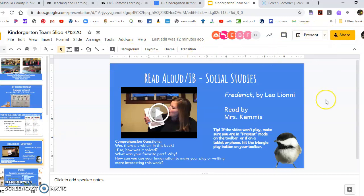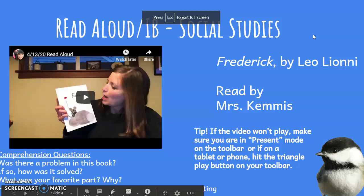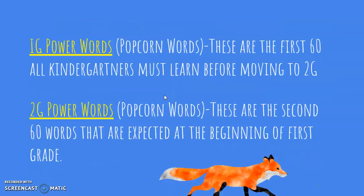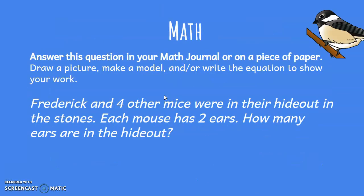If it doesn't work, click on present mode and you'll just see one screen at a time. When you click on that, she'll be reading the book 'Frederick.' Then if you keep scrolling down, you'll come to the math problem that has to do with the book you just read — Frederick and four other mice were in their hideout.